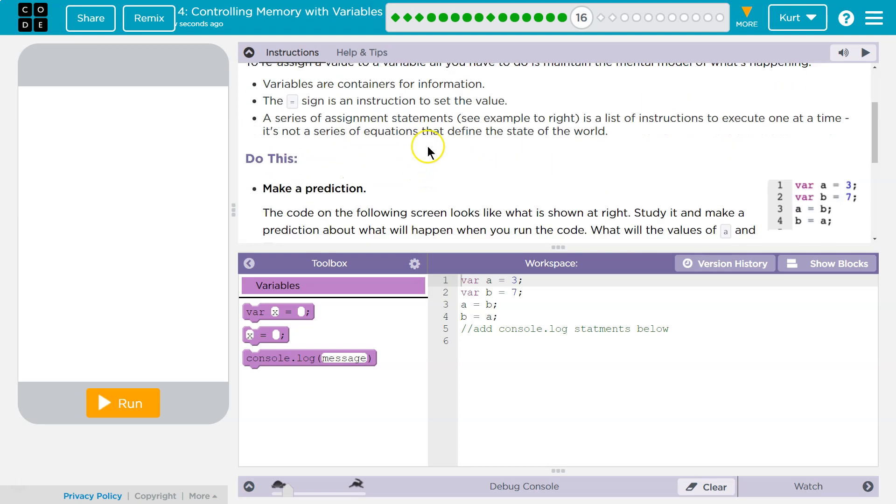So they're making this sound scary. Don't be scared. Variables are containers for information, they're names for information. The equal sign is an instruction to set the value. It's saying hey, this is now named whatever - a, bob, score, whatever we want to name it.